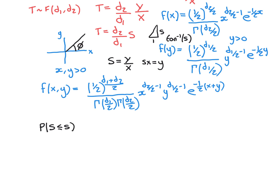It makes far more sense to perform this integral in polar coordinates, because we're integrating from zero to infinity in r and from zero to a given angle. If we used Cartesian coordinates, the limits of the inner integral would depend on the variable of the outer integral, which is much more painful. So the better approach is polar coordinates.